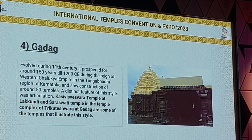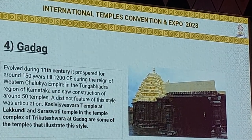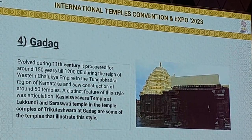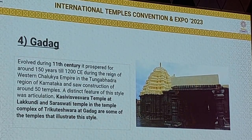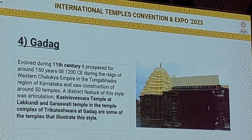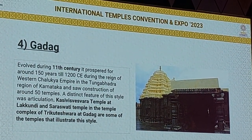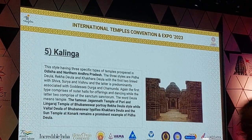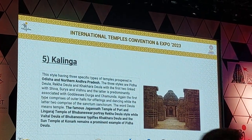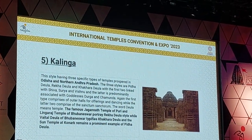This method still exists. The Kasi Vishwanatha temple belongs to this methodology. The next style is Kalinga.